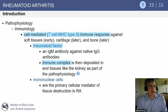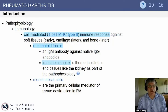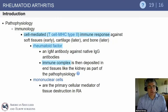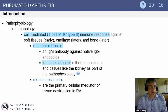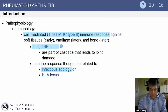Rheumatoid arthritis is a cell-mediated immune response initiated at the soft tissue level — the synovial lining. As the process progresses, it involves cartilage and later bone. Many patients present with positive rheumatoid factor, which can deposit in other tissues. It's important to remember that rheumatoid arthritis is not just an orthopedic problem, but a systemic problem affecting multiple tissues.